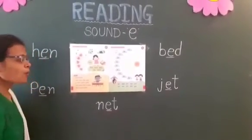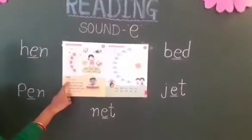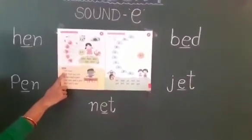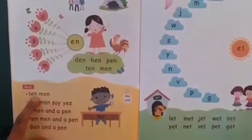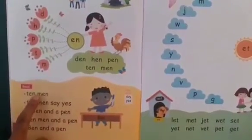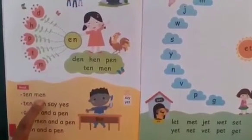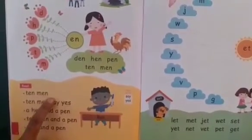Now we will read the book. First of all, put your finger on T. T-E-N. T-E-N, ten. M-E-N. M-E-N, men. Ten men.